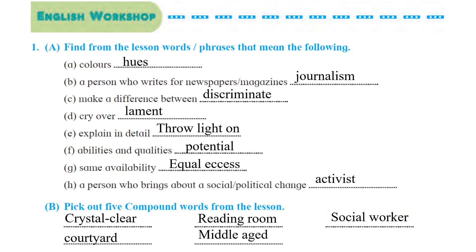Let us start with question number 1: Find from the lesson a word or phrase that means the following. First, 'Colors' means 'uses'. Second, a person who writes for a newspaper or magazine is known as a journalist. Third, 'make a difference between' means 'discriminate'.